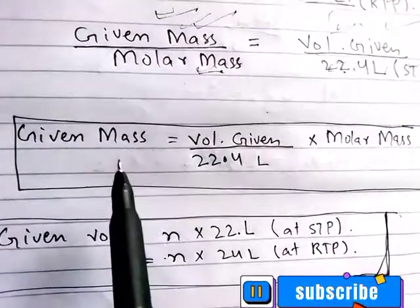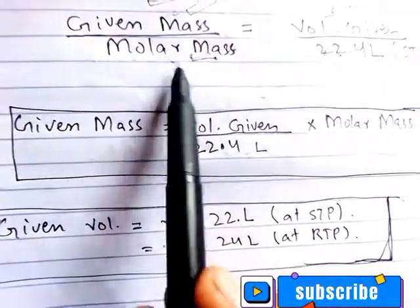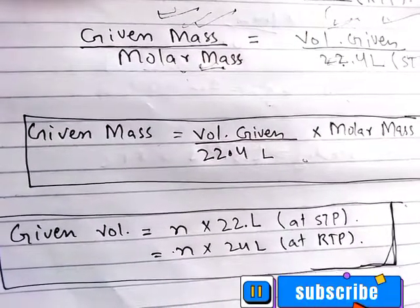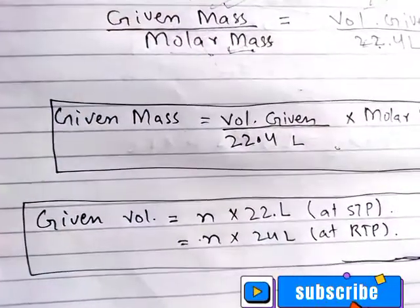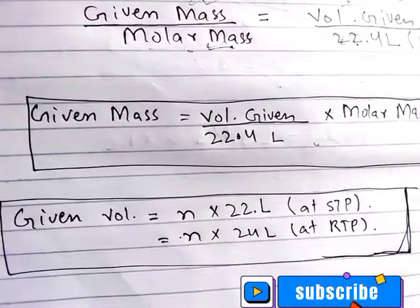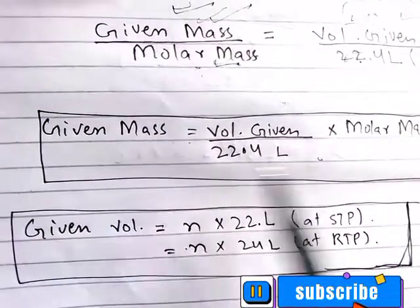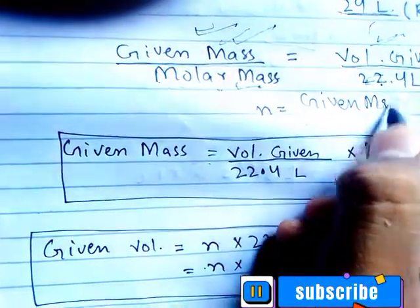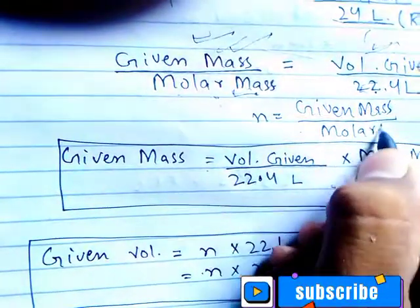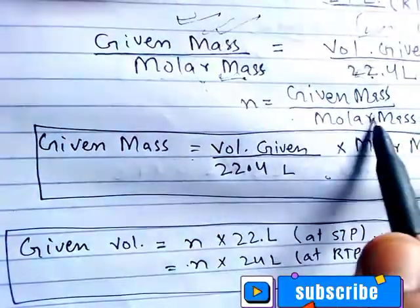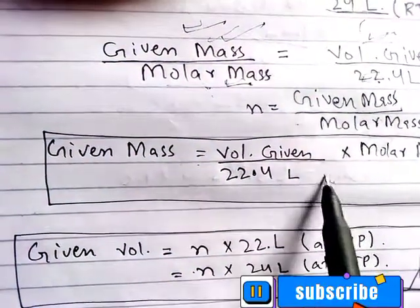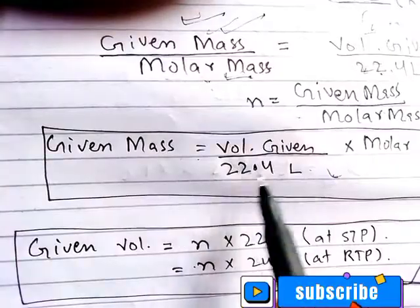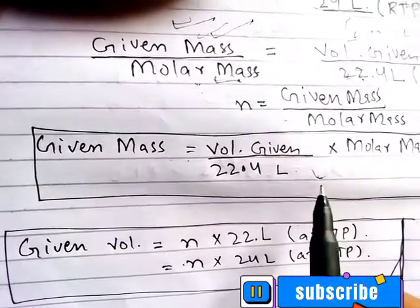If we drive the combined formula: take given mass divided by molar mass to get moles, then multiply by the molar volume. If you have a concept of volume at RTP or STP — remember the previous formula: moles equals given mass divided by molar mass. If you know molar mass and moles, multiply to find mass. For volume at RTP, use 24 L; for STP, use 22.4 L — not 24.